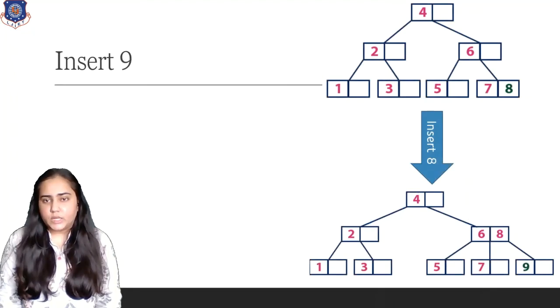For inserting 9, once again, compare 9 with 4, go to the right, compare 9 with 6, go to the right. 7, 8, and 9 should come right next to 8. But there's no space. So we are going to shift 8 upwards. After shifting 8 upwards, we do not need to move anything else. So you can just place 9.